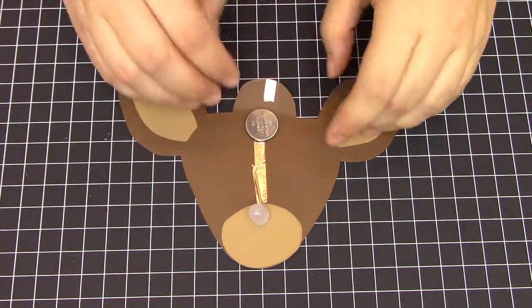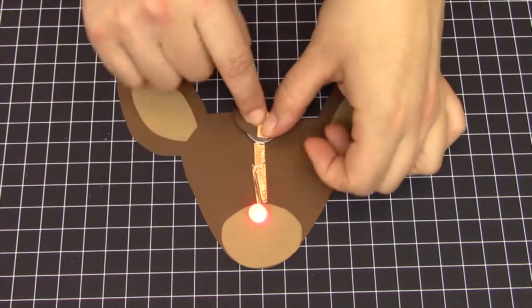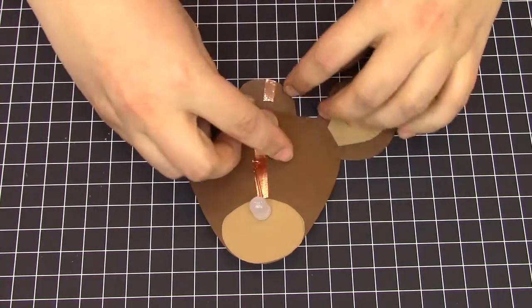Next, take your 2032 battery and fold the tab on top of it. If it's connected correctly, the nose will light.